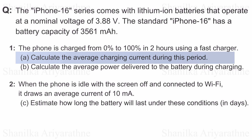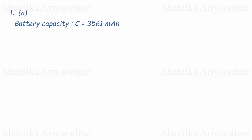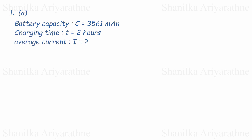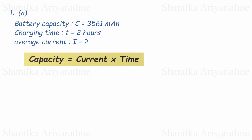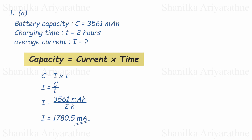Now it's time to solve the iPhone 16 battery problem. Let's start with Part A. We're told that a fast charger takes 2 hours to fully charge a 3,561 milliamp-hour battery. The question is: what's the average charging current? Capacity is just current multiplied by time, so to find the average current we rearrange: current equals capacity divided by time. Plugging in the numbers, the average charging current is 1,780.5 milliamps.